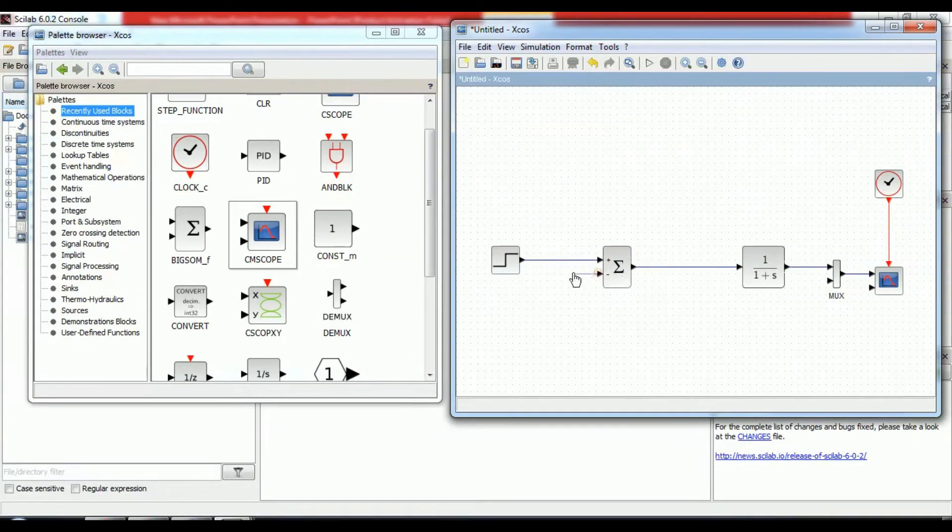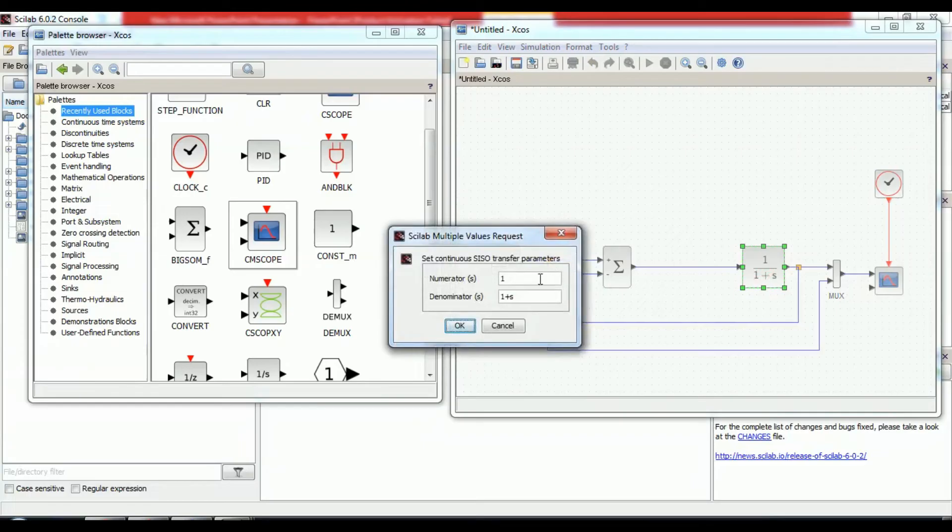Here, you can change the signal. It is positive and negative. Here, you can put the numerator and denominator values of transfer function. Here, our transfer function is 1 upon s square plus 10 s plus 20.